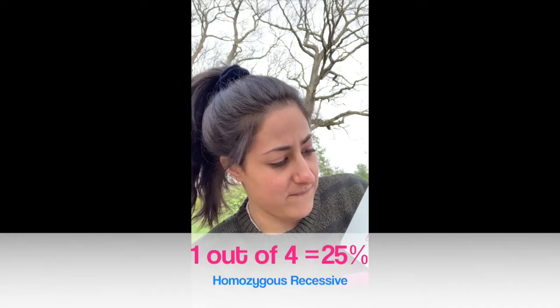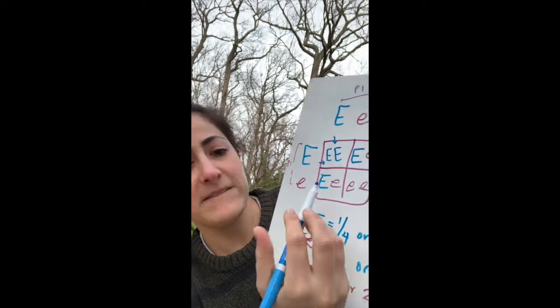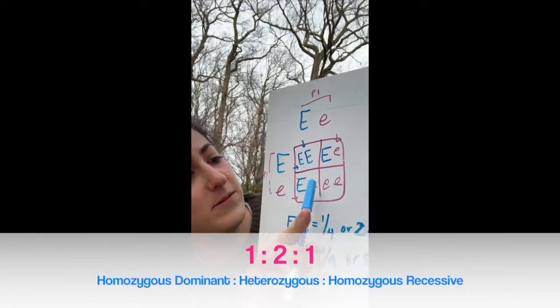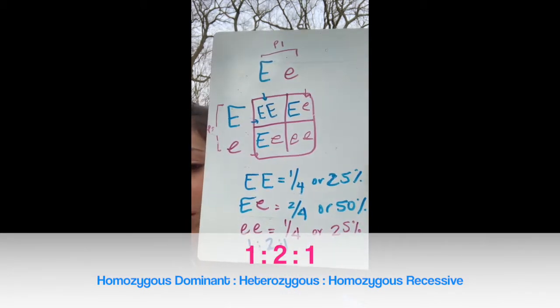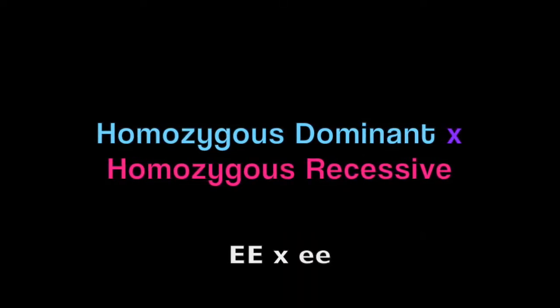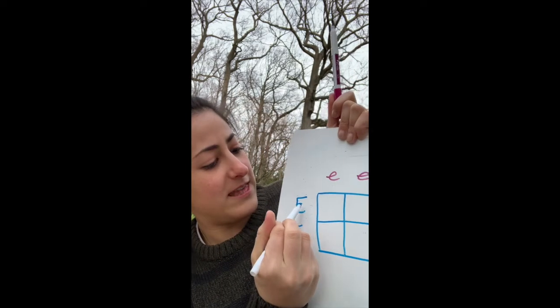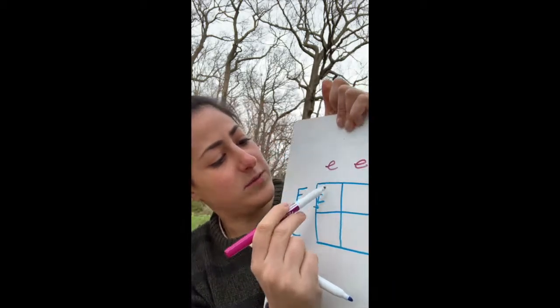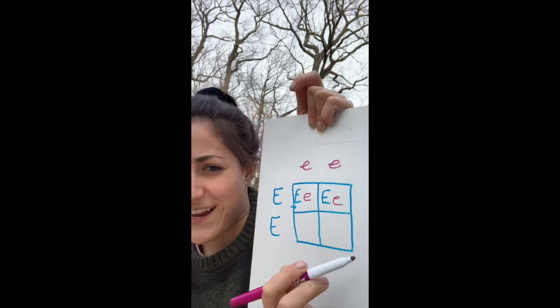Heterozygous ended up in two boxes, so that's two out of four — 50%. Homozygous recessive is one out of four — 25%. If a question asks for the ratio of homozygous dominant to heterozygous to homozygous recessive, it's 1:2:1. Some questions will ask you about that ratio specifically, so that's why I'm highlighting it.